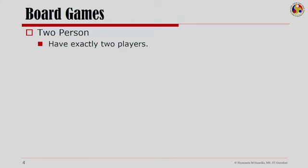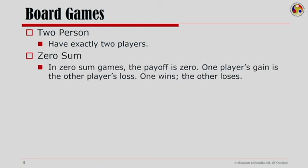Here we will look at a group of games which are called board games such as chess, checkers, or more commonly played tic-tac-toe. Let us now quickly review the characteristics of these board games before we move on to talking about how these games are to be dealt with within AI. Board games are those which you play on a board. We are talking of 2-person games, that is we have exactly 2 players. These games are zero-sum games, where one player gains and the other player loses.